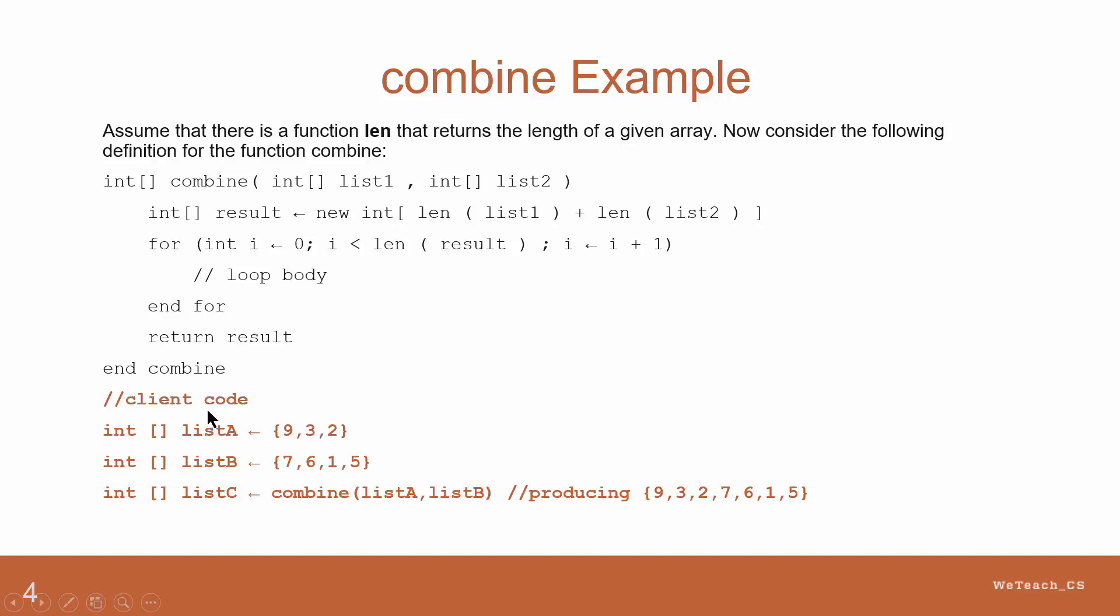Here you see two arrays called listA and listB, each containing several values. A third array called listC is then created by calling the combined method and sending listA and listB in as parameters. The returned result will be an array containing all of the values from listA and listB.